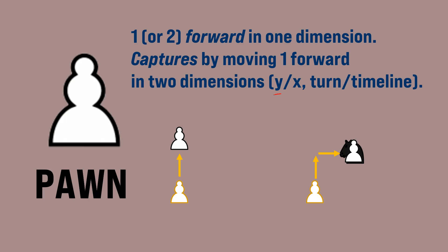So if it moves forward in the Y dimension, then it must move side to side in the X dimension. Or, if it moves forward in the turn dimension, then it must move forward in the timeline dimension. You cannot mix and match the X and Y, and the turn and timeline dimensions when capturing with a pawn.